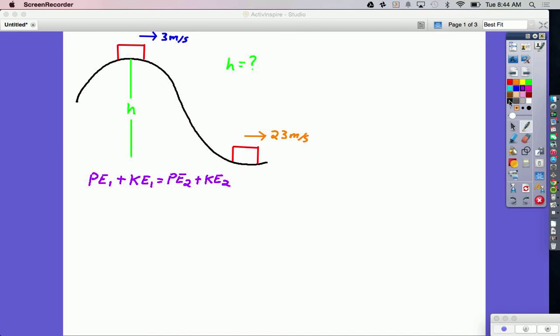From here what we're going to do is cancel out or cross out anything that we know the object doesn't have. So initially we know that the roller coaster is up on top of the first hill so it definitely has gravitational potential energy, so that's going to stay. It's also moving at three meters per second so we know it's got kinetic energy, so that's going to stay.